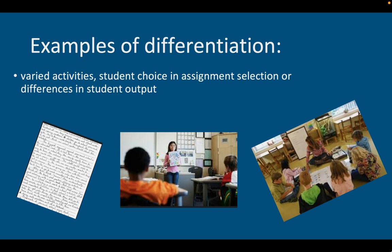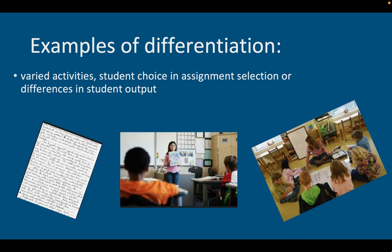Some examples of differentiation include varied activities, student choice in assignment selection, or differences in student output. For example, autonomy in process, like writing, presenting, or small group work may be provided for students to demonstrate understanding of the same learning objective.